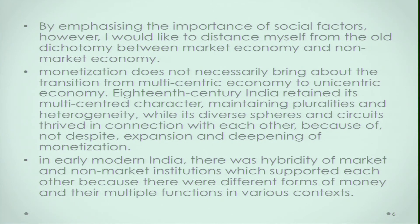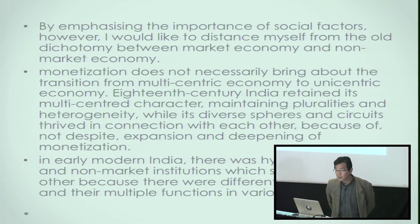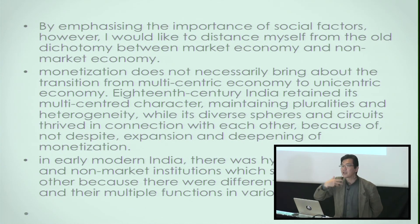18th century India retained its multi-centered character, maintaining pluralities and heterogeneity while its diverse spheres and circuits thrived in connection with each other. They are concurrent and connected but not integrable. There was an interconnection of diverse spheres precisely because there were forms of money that connected these diverse forms, which led to vibrancy of economic activity, social activity, and penetration of the early modern state's administrative power into localities. So money played a very important role in forming the early modern situation in India, with a hybridity of market and non-market institutions supporting each other — market exchange, local community relationships, and political relationships.